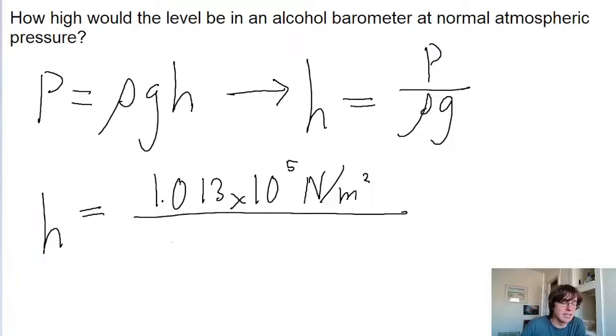Then we divide by the density, and the density of alcohol is something you can look up. The type of alcohol you'd have in a barometer usually has a density of about 0.79 times 10 to the power of 3 kilograms per cubic meter.